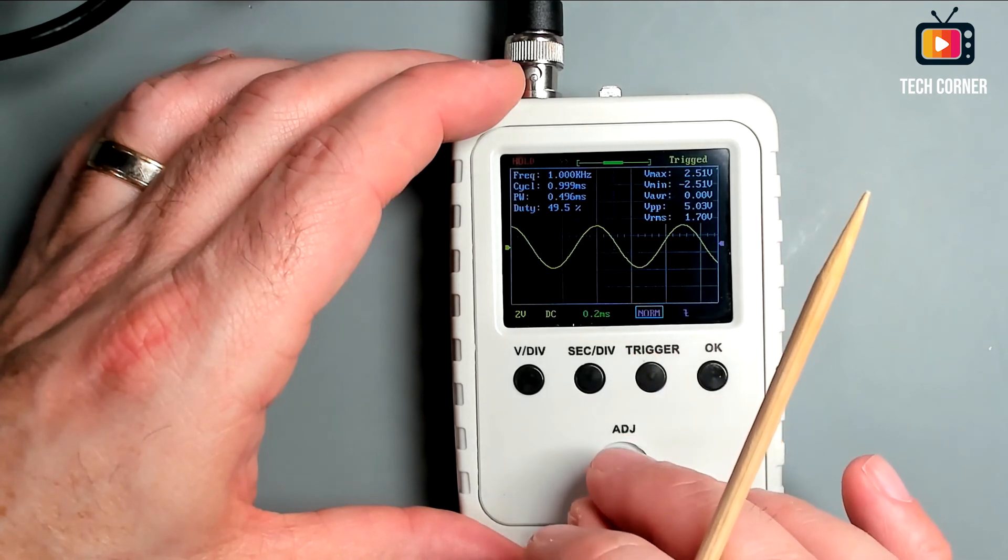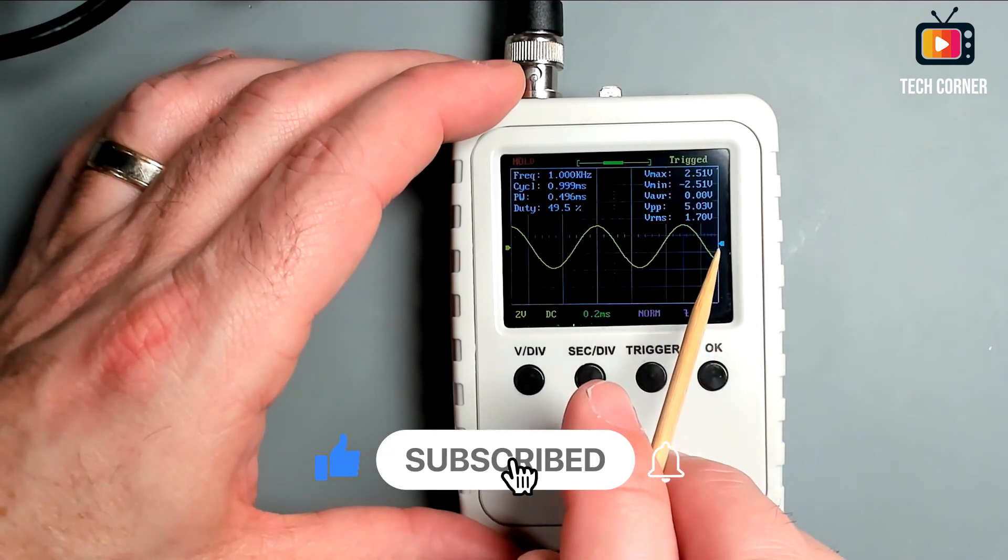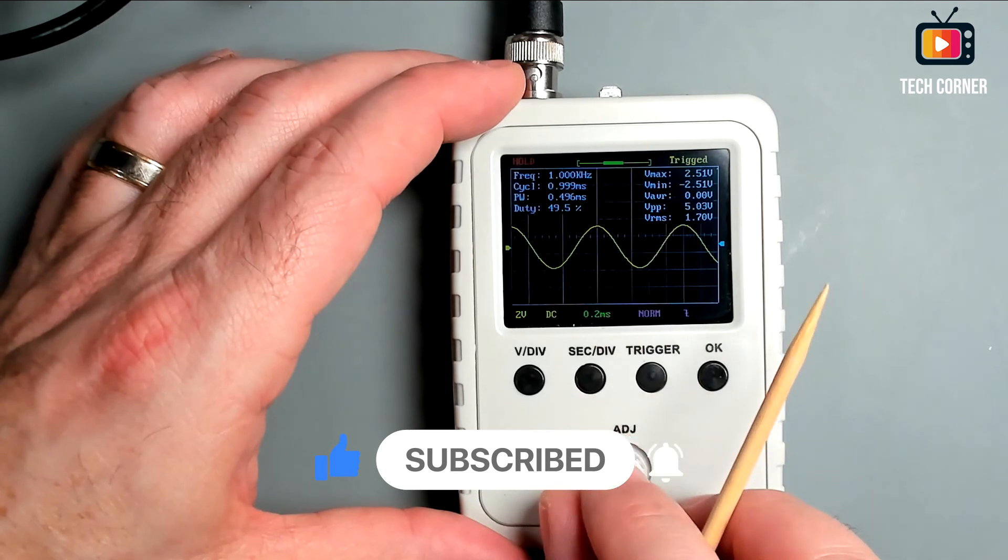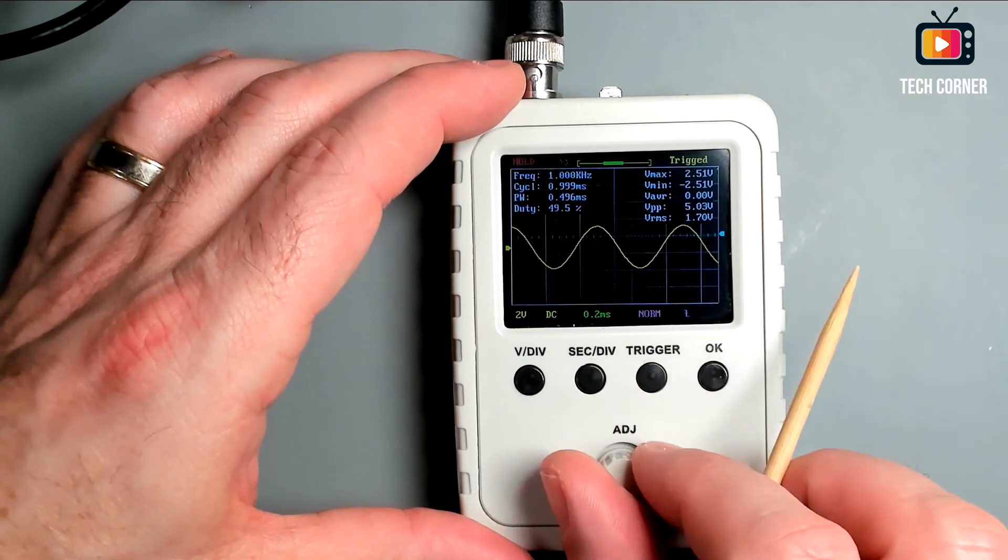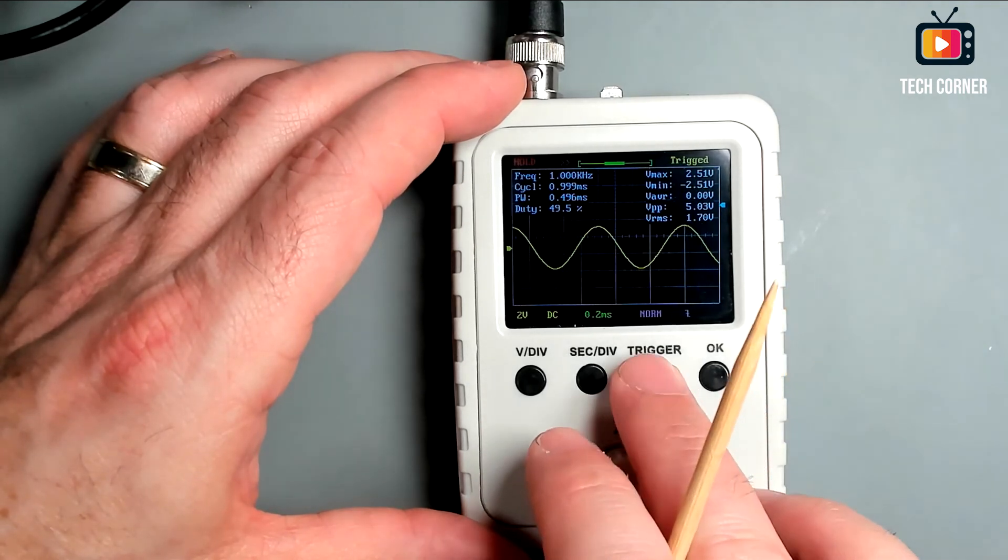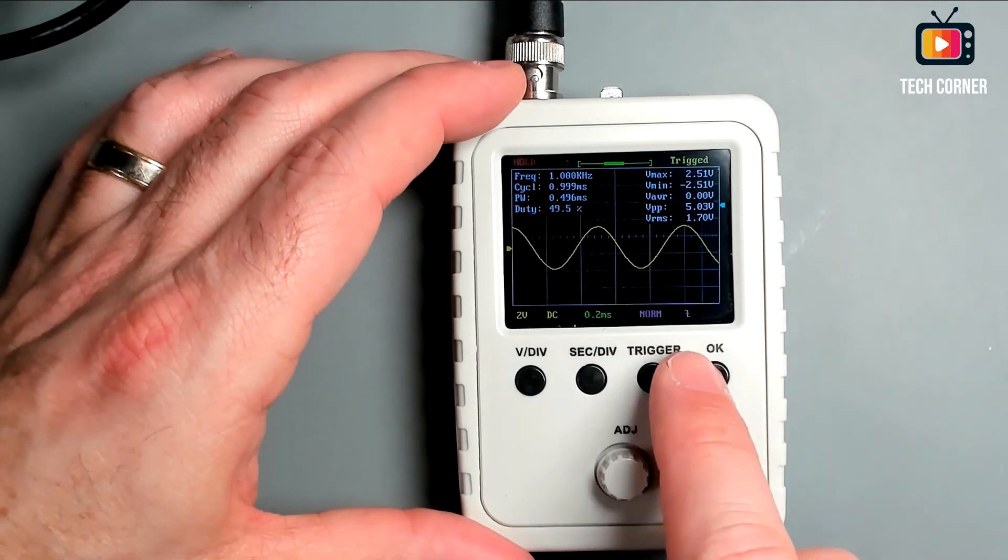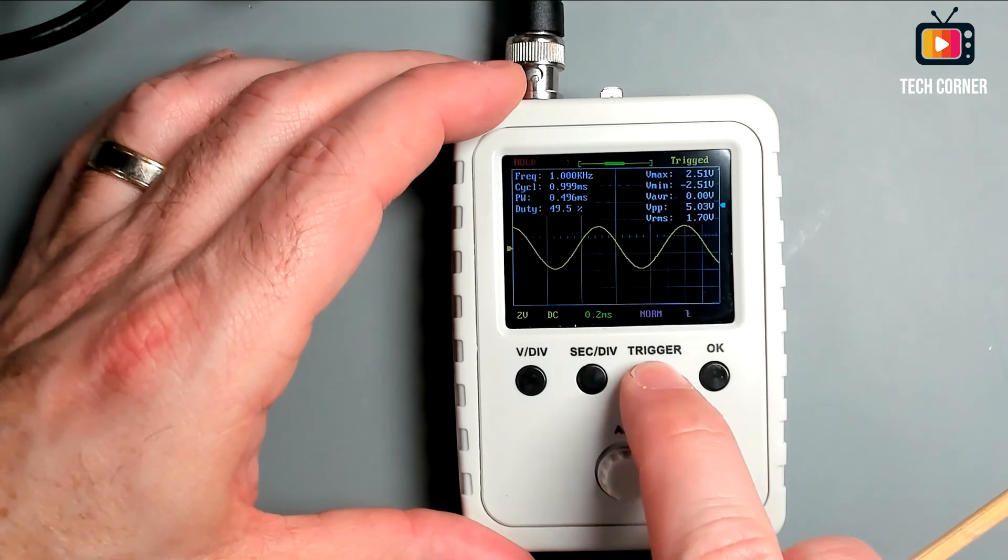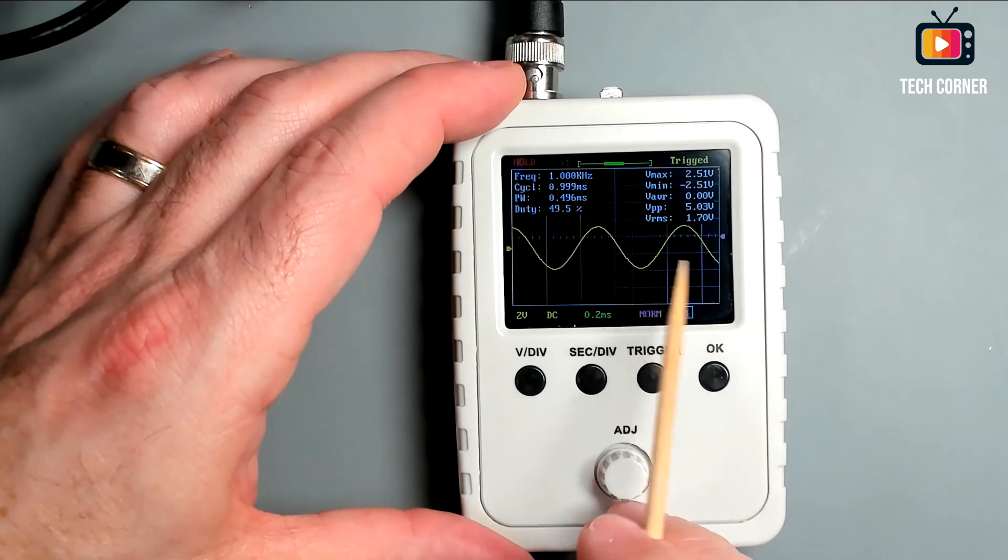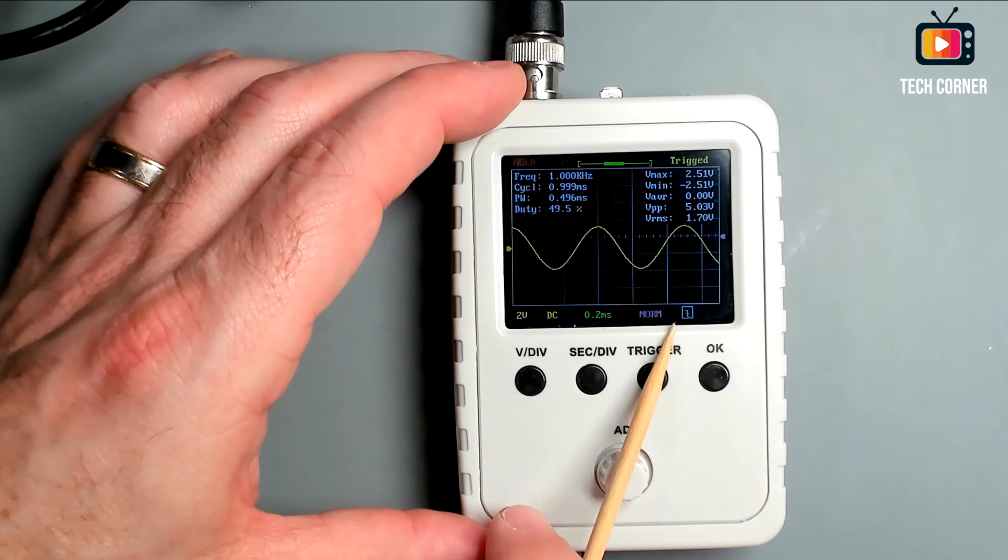Let's change the trigger value again. Let's put it in normal. And when we press the trigger again, we see that the arrow on the right side is now blue and we can move it. Let's take it out of the range of the signal. So like the other buttons, when we press for three seconds on the trigger, it will auto adjust to the center.